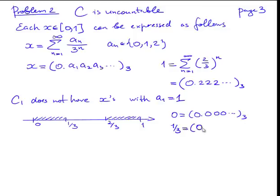What about 1/3? 1/3 can be written also in the following way. It can be written in the way that the first digit is 0 and then we have a sequence of 2's. Any number between 0 and 1/3 actually can be represented by a fraction such that digit A1 is 0.